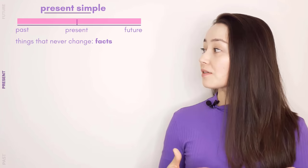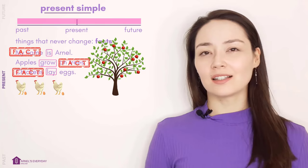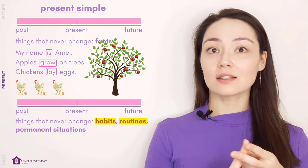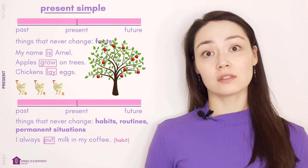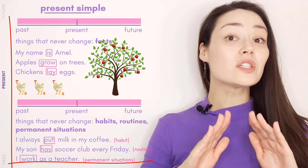Present simple: things that never change, like facts. My name is Arnelle. Apples grow on trees. Chickens lay eggs. Fact, fact, fact. What other things never change? Habits, routines, permanent situations. I always put milk in my coffee. My son has soccer club every Friday. I work as a teacher. We do not use the present continuous for these things.